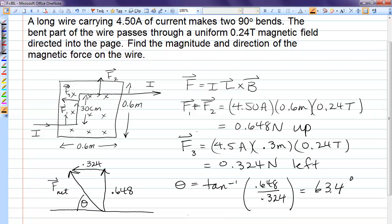We have to find the magnitude of the net force. So that's our direction. F net magnitude would be the root of 0.648 squared plus 0.324 squared, which comes out to 0.724 newtons. So our force is 0.724 newtons at 63 degrees above the negative x-axis.